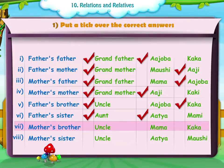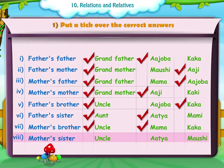7. Mother's brother: Uncle or Mama or Kaka. 8. Mother's sister: Uncle or Adzoba or Maoshi.